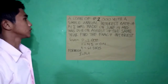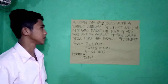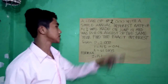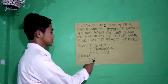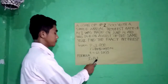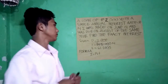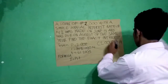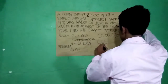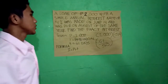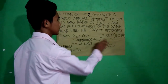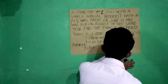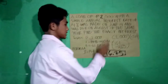Seventh problem: A loan of 2,000 with a simple annual interest rate of 14% was made on June 14 and was due in August of the same year. Find the exact interest. Formula: I equals P times R times T. Solution: 2,000 times 0.14 times 61 over 365. The answer is 46.75.